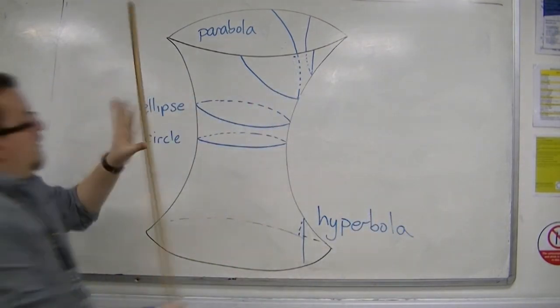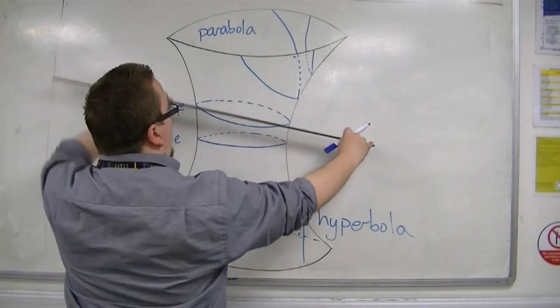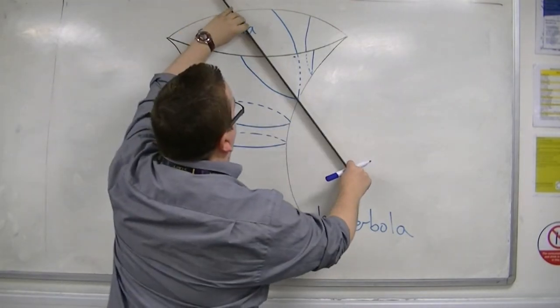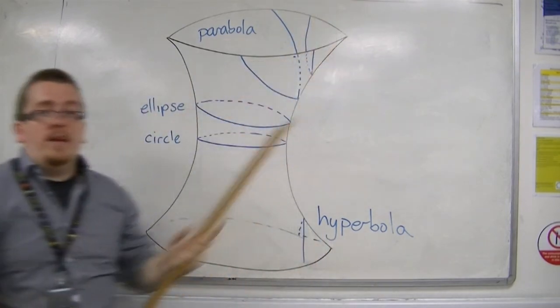So depending on which way you cut the hyperboloid, you get slightly different shapes. And they're all coming from this three-dimensional shape known as the hyperboloid.